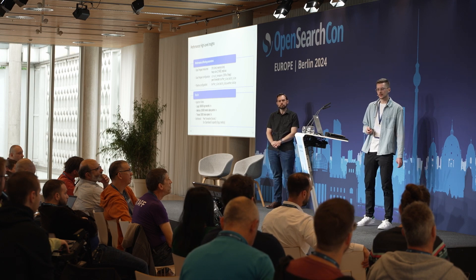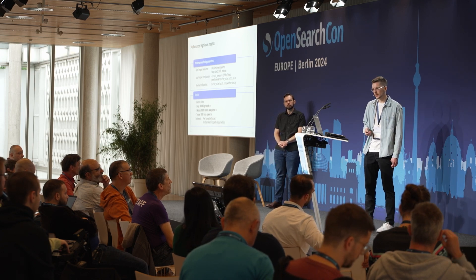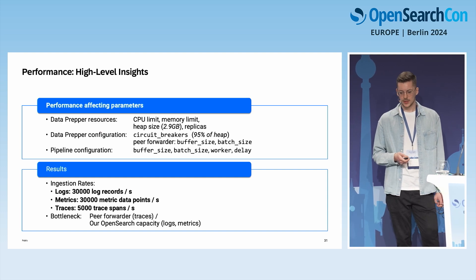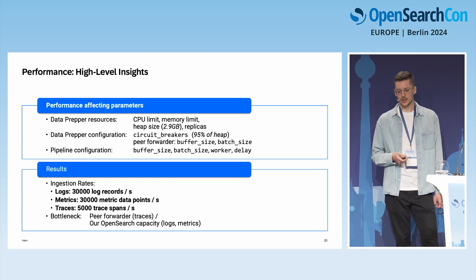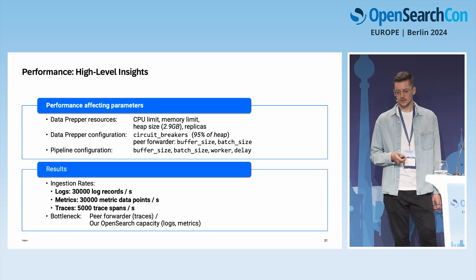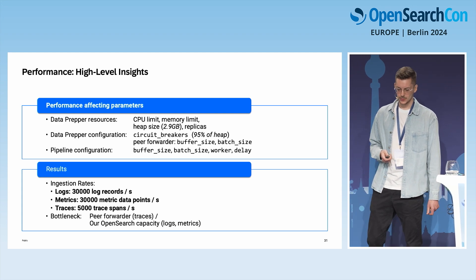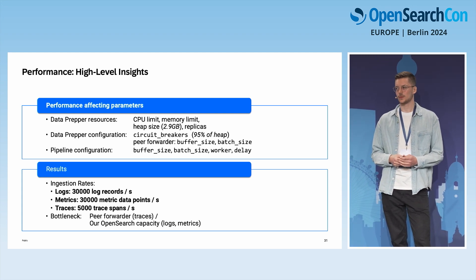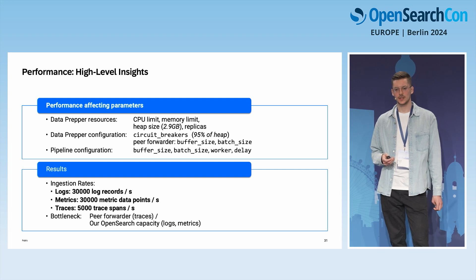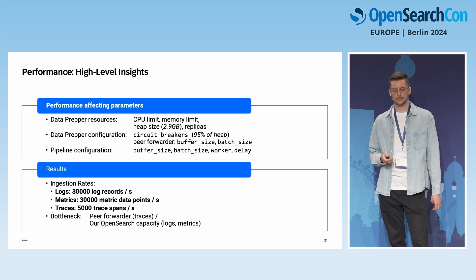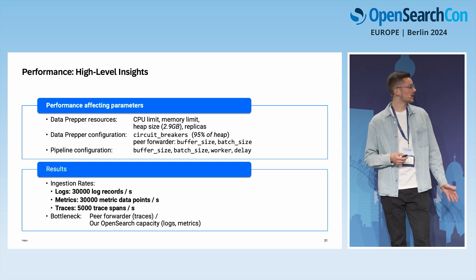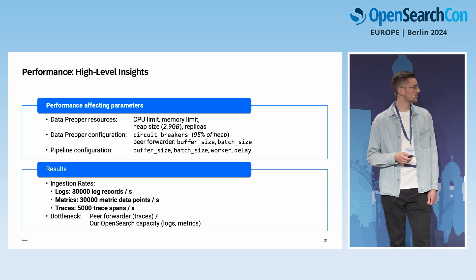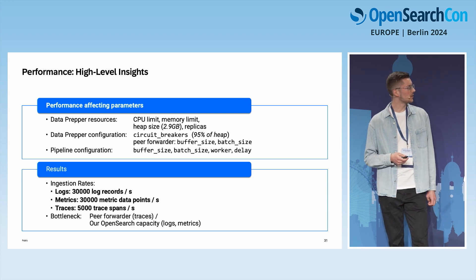Almost at the end, I want to give a quick overview of performance and some high-level insights. We did performance testing with DataPrepper. There are various performance-affecting parameters, some already seen in earlier slides — Kubernetes resource parameters like CPU limit and memory limit, heap size, and number of replicas.